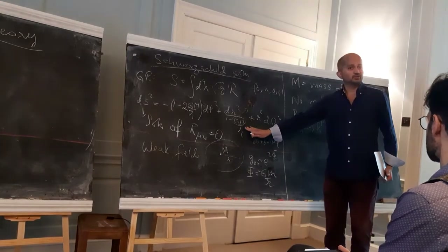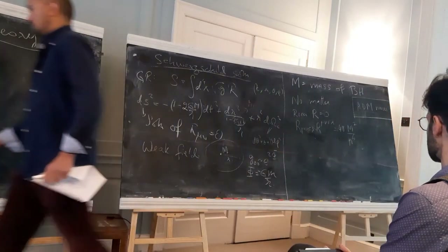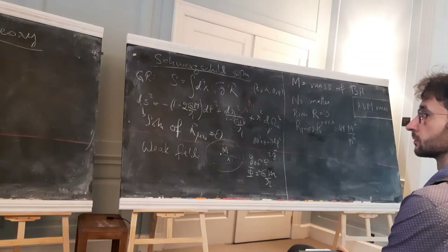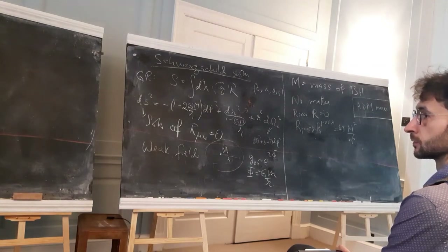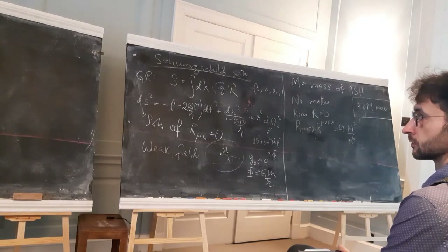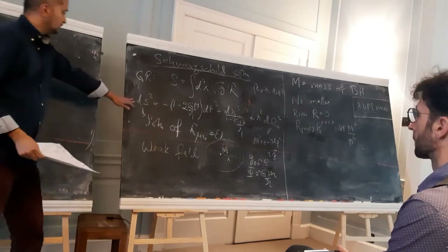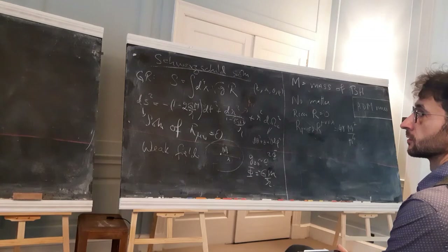At r = 2M, g₀₀ → 0 and g_rr → ∞, so a priori it's a special point, but it's not a curvature singularity. To analyze it we make coordinate transformations to remove the coordinate singularity. We look at radially ingoing photons: setting ds² = 0 with no angular variation gives dt = −dr/(1 − 2GM/r), and integrating gives t = v₀ − r − 2GM log|r − 2GM| + const, where the right-hand side is called r*. Ingoing photons are labeled by v₀ = t + r* = constant.